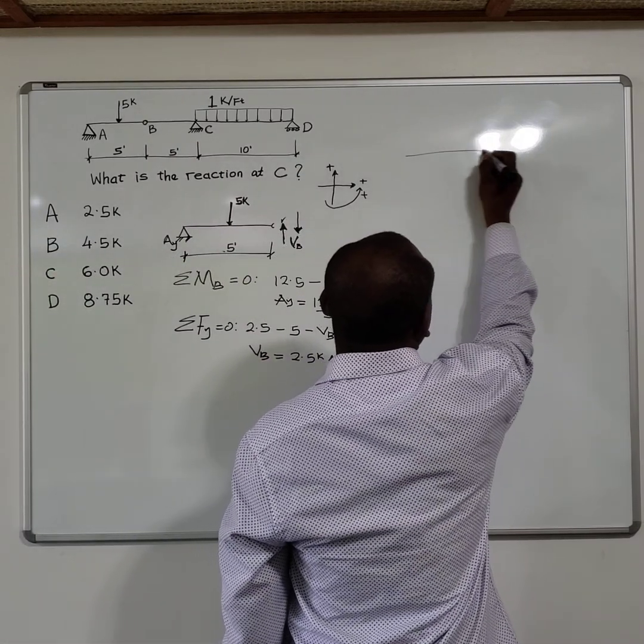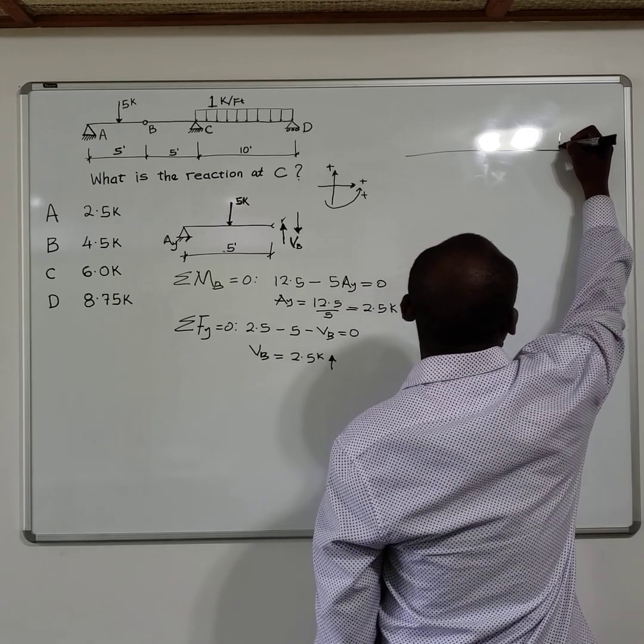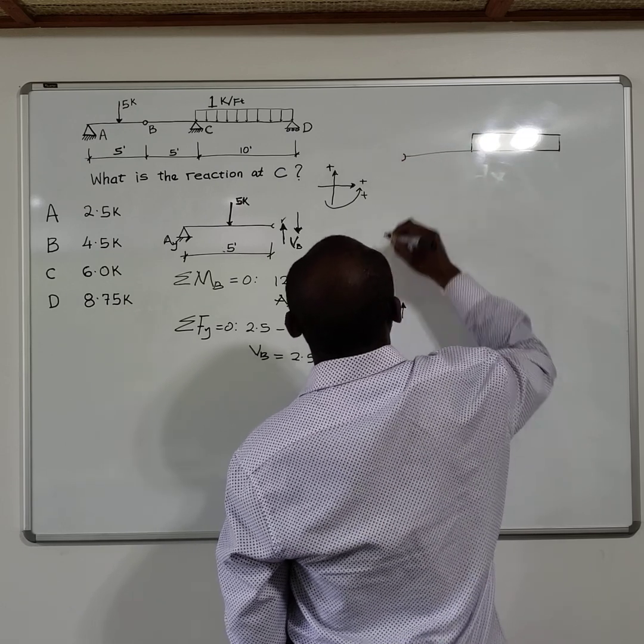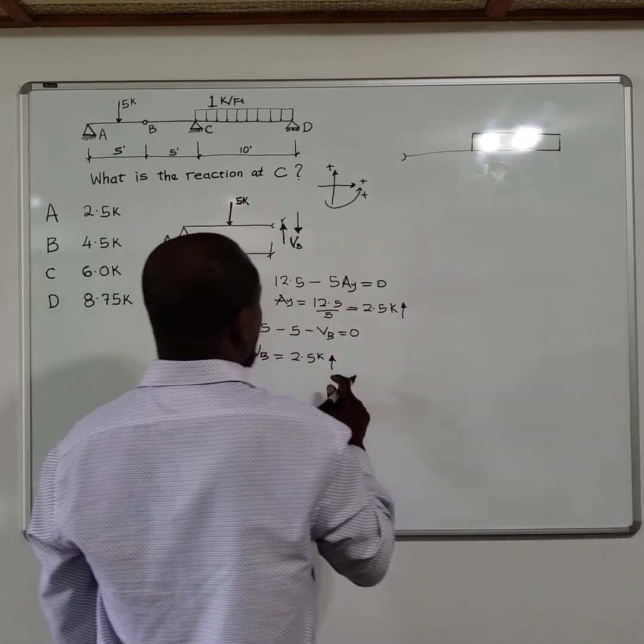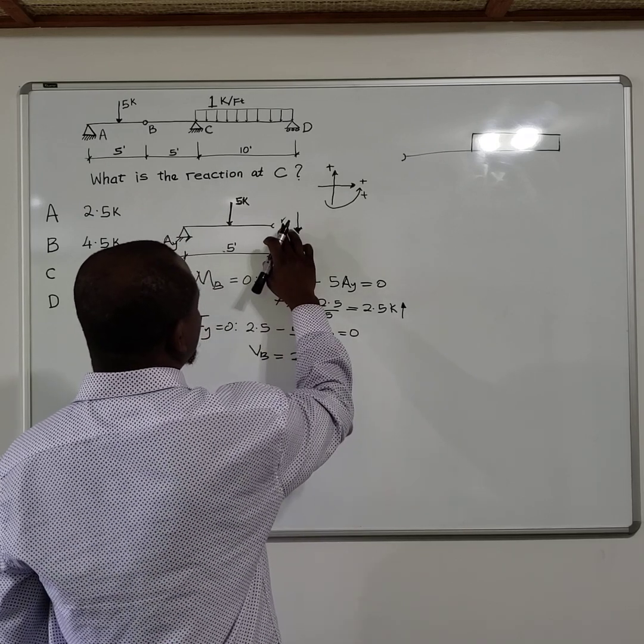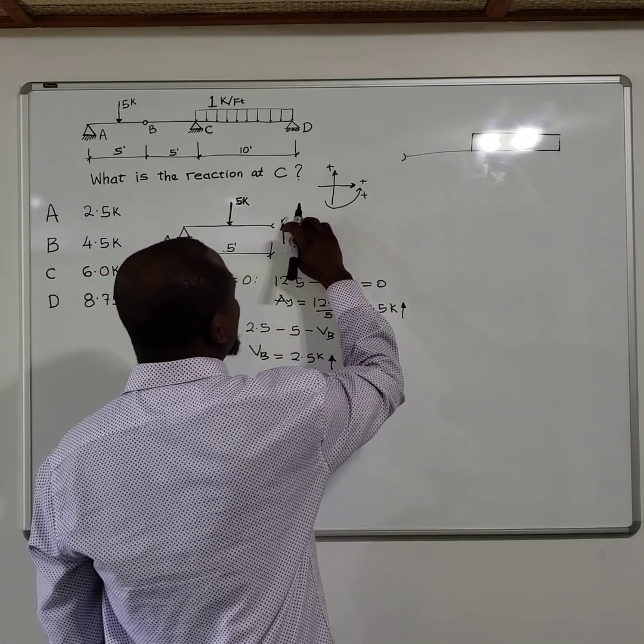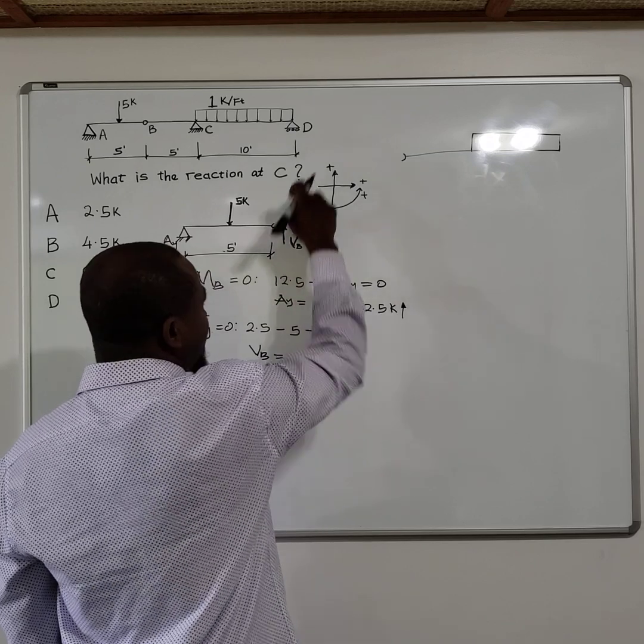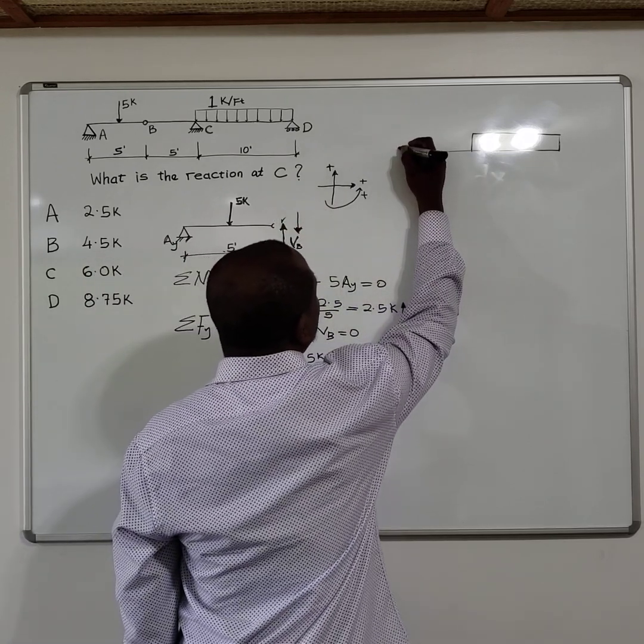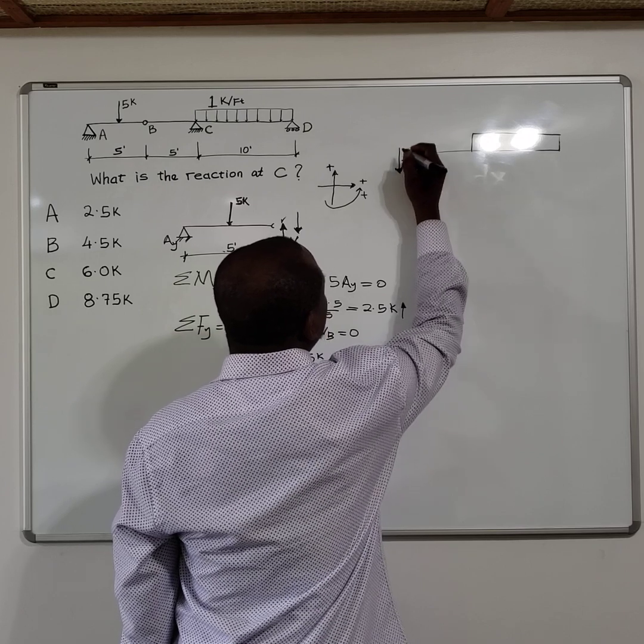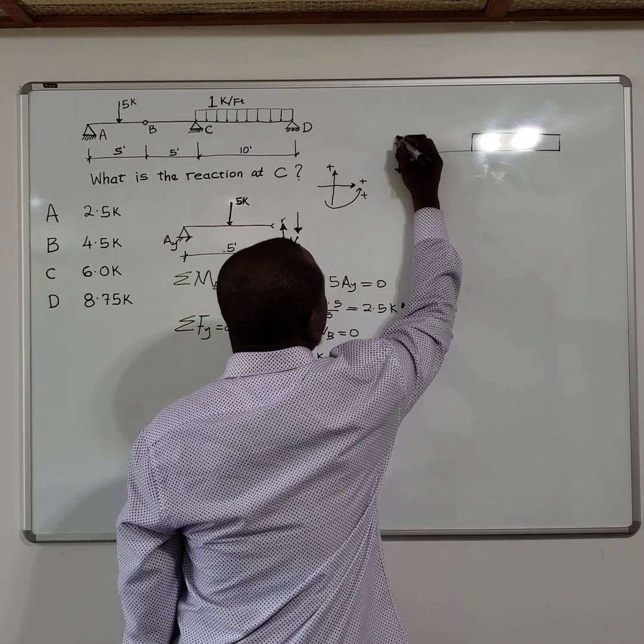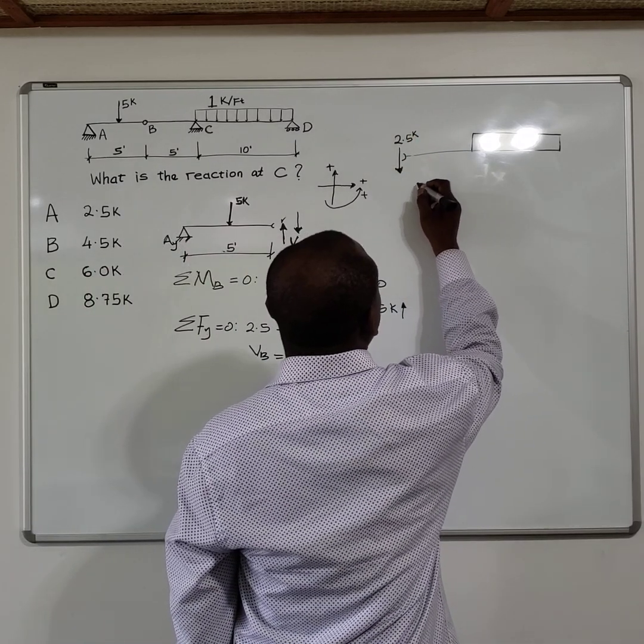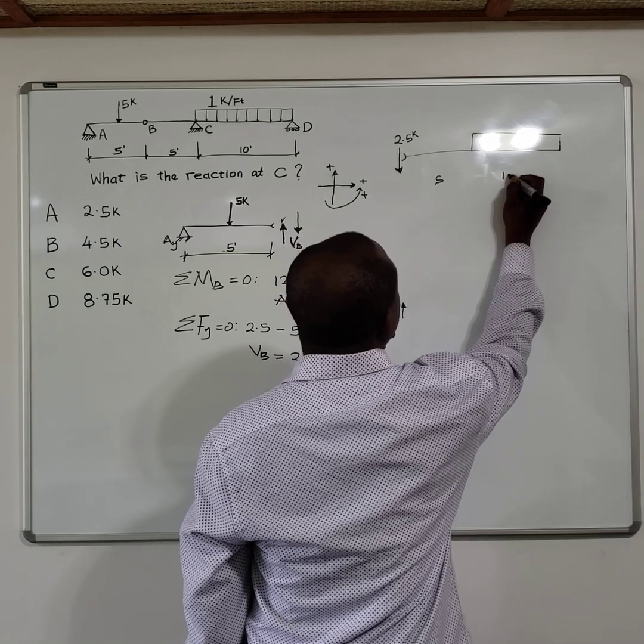So point BD, you can sketch another free body diagram. This is our point B. We already established that point B is positive here, so but on the other side it creates a negative reaction. So this was going up, to balance that there has to be a downward force, so this force is coming down here, and we know the magnitude of that force as 2.5 kips. So this point here is 5 feet and here is 10 feet.